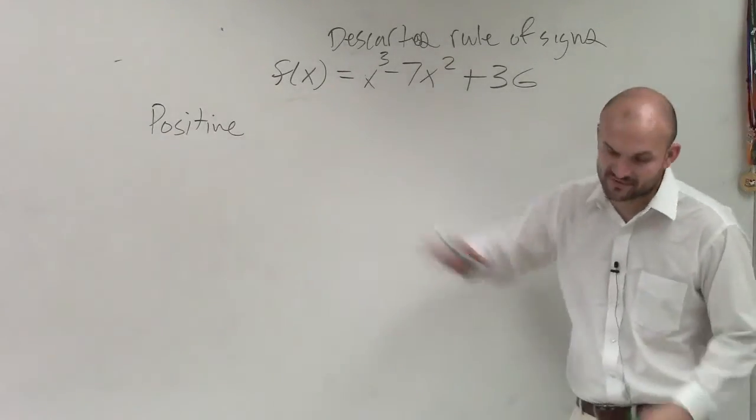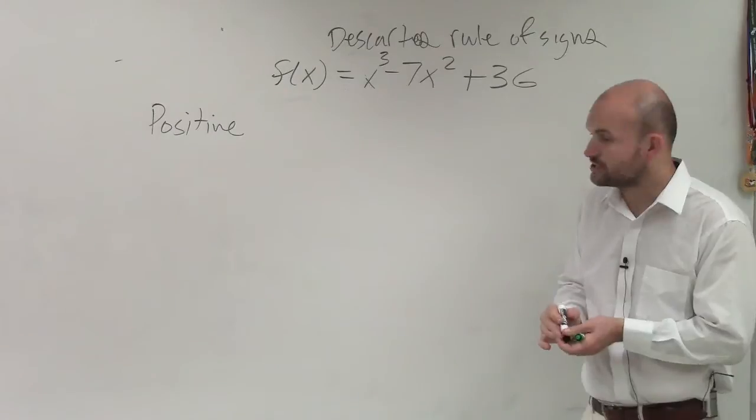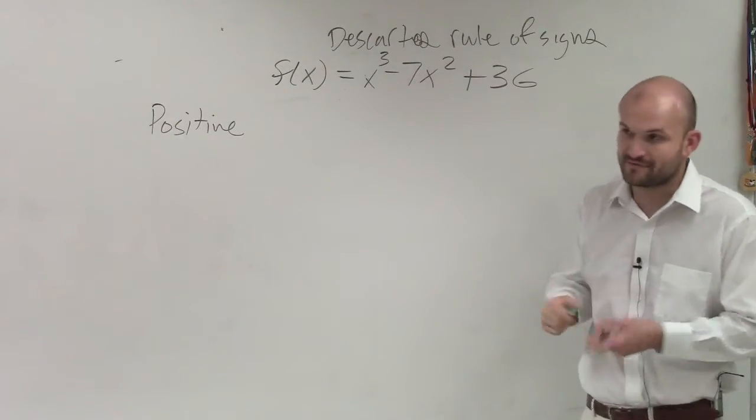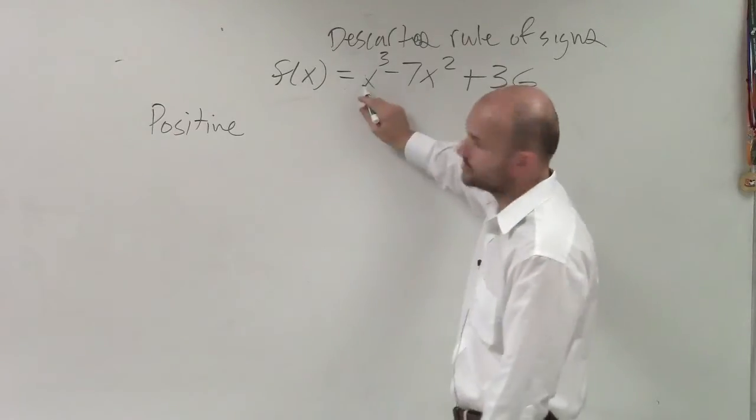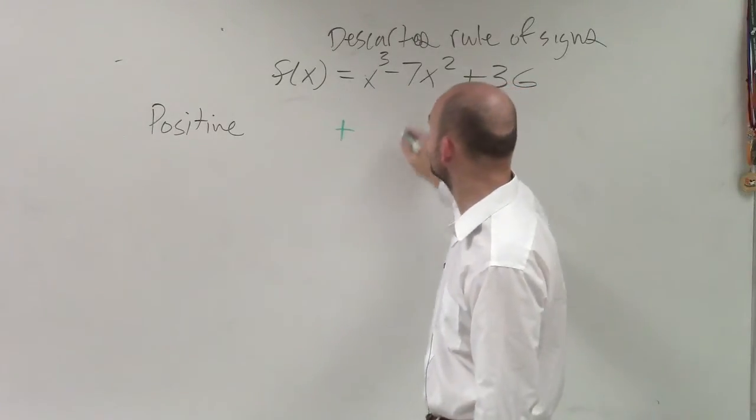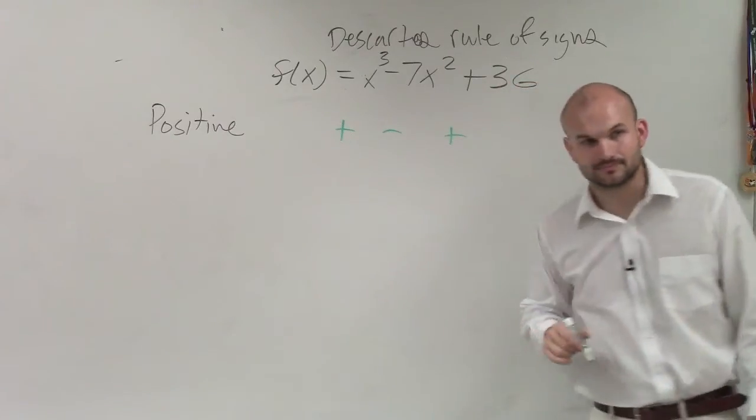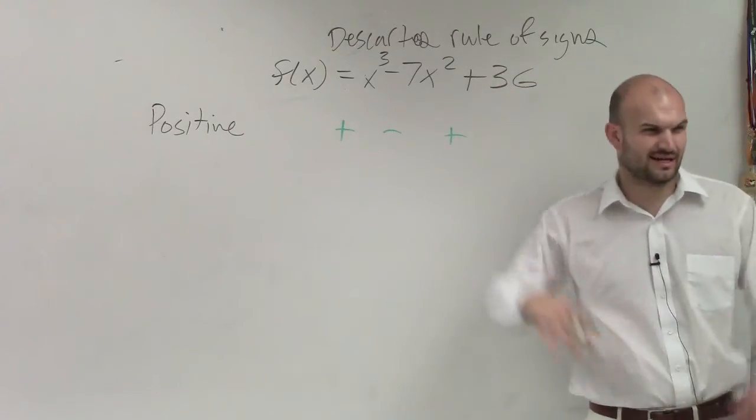So the first thing we do is the positive test. And to do the positive, what you do is you're going to take the sign of each monomial and bring it down. You don't have to bring it down, but I like to do it. So that's x cubed, that's a positive x cubed. That's a negative 7x squared. And that's a positive 36. Right? Does everybody see what I did? I just brought down the signs.